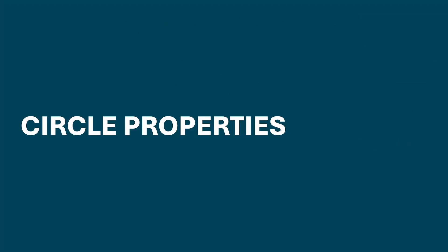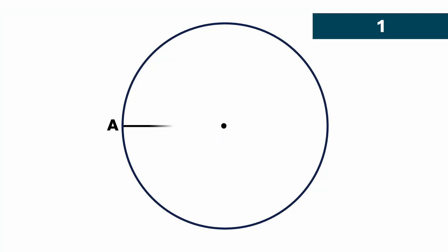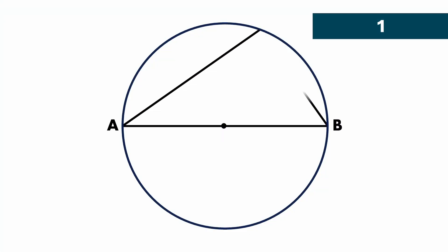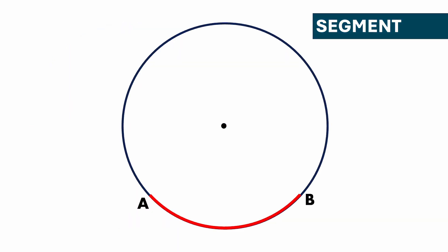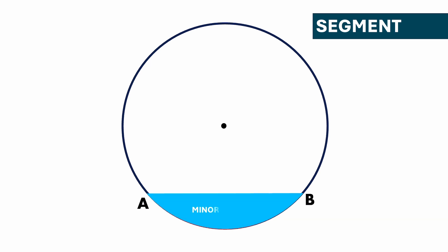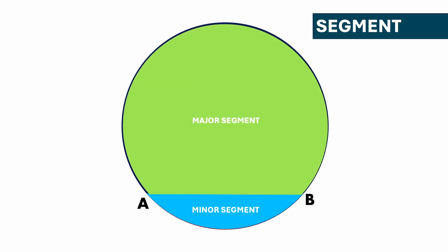Now let's discuss circle properties. The first property: if AB is a diameter and you make a triangle on the circumference, then angle ACB will be equal to 90 degrees. Keep in mind this property works only if AB is the diameter. Also, if we take an arc AB and the chord AB, the area between the chord and the arc is called a segment — the smaller one is the minor segment and the larger one is the major segment.